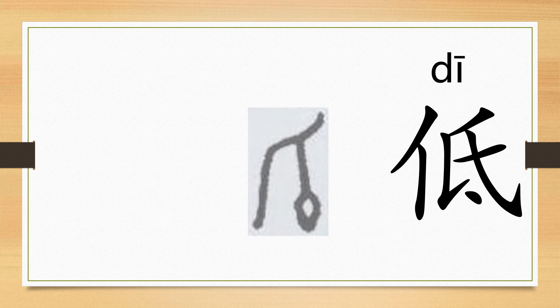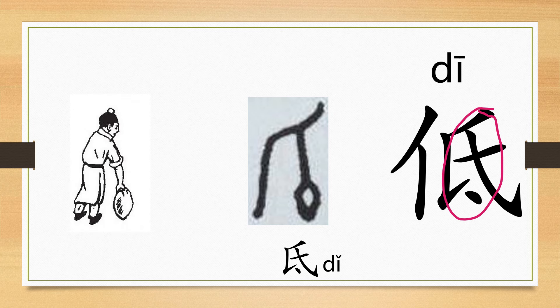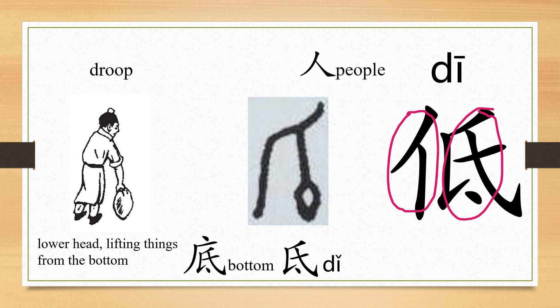The ancient writing for the character 低 originally represents its radical, the character 低, which evolves from the image of a man lowering his head and lifting things from the bottom. People then developed another character 底, which means bottom. Nowadays, the Mandarin writing for 低 includes the radical that represents the character 人 (Ren), which means people, and the character 低.